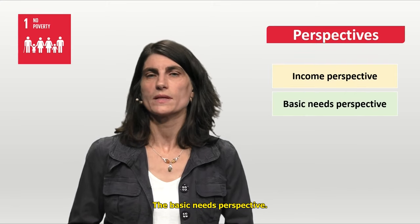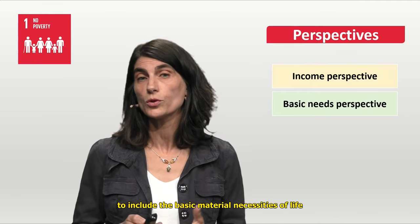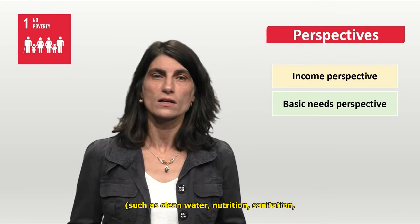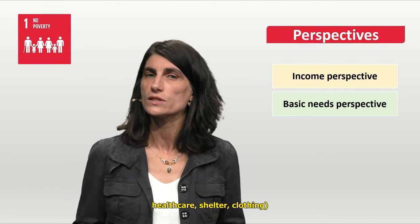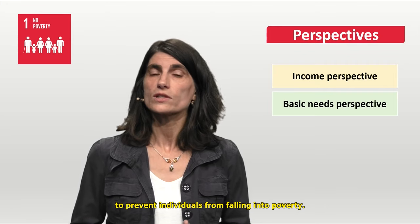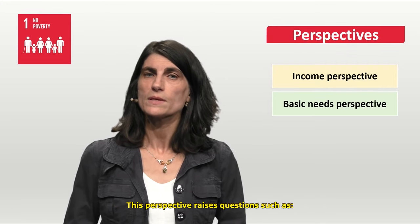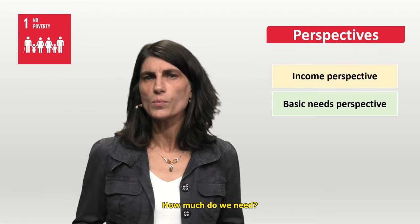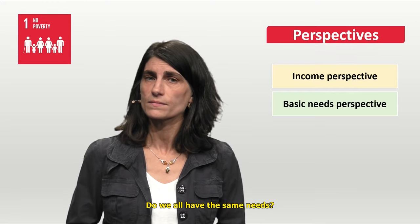The second is the basic needs perspective. It goes beyond the income perspective to include the basic material necessities of life, such as clean water, nutrition, sanitation, health care, shelter, and clothing, to prevent individuals from falling into poverty. This perspective raises questions such as: how much do we need, and do we all have the same needs?